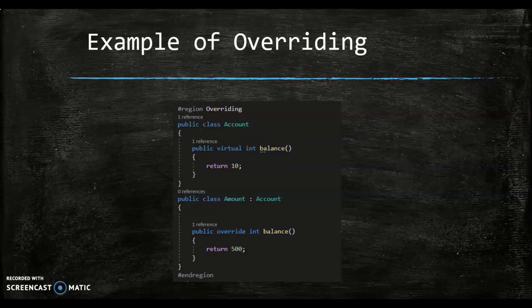In the example of overriding displayed, the result of the balance method can be 10 or 500. The above code declares two classes: account and amount. The amount class is inherited from the account class. The method balance is overriding in the amount class. The value of the balance method will be decided based on the calling program and its use of the base class or derived class.